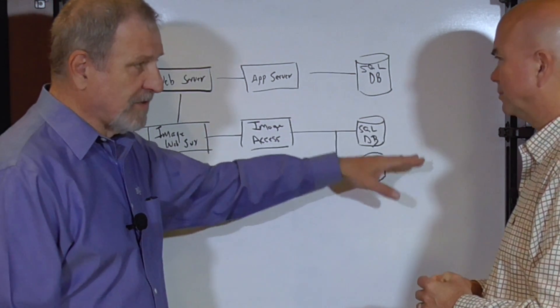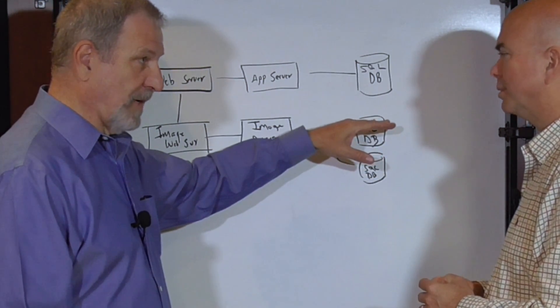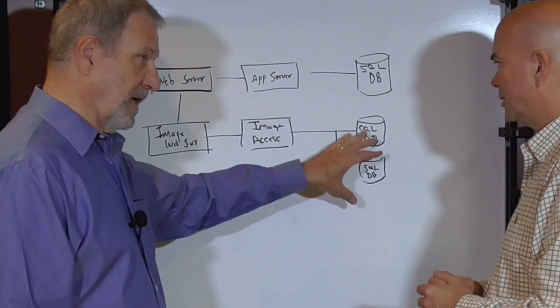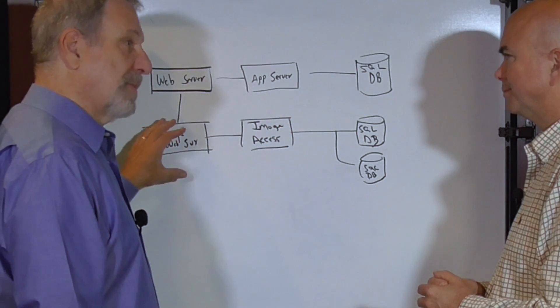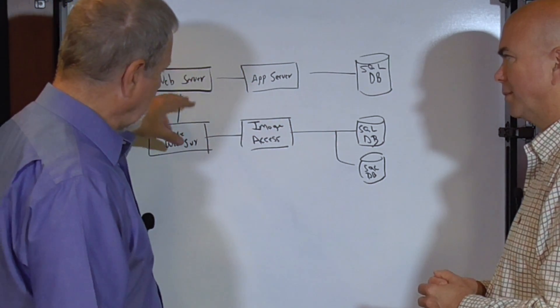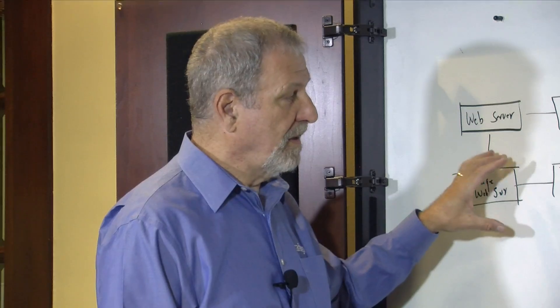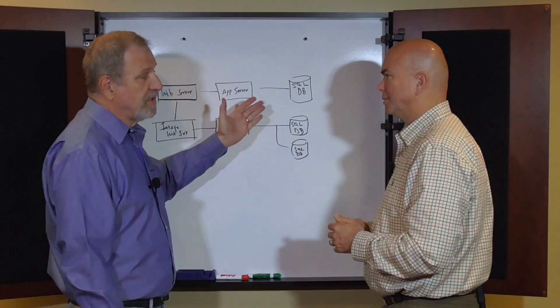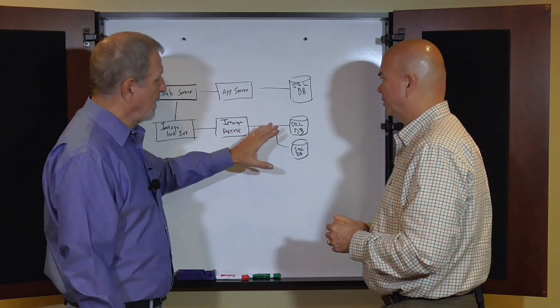Usually what people do is build a parallel track. They've got a set of file systems or relational databases. They've got an application that can retrieve those images from the relational databases and then turn them into something they can serve up on the web. Might be the same web server or a parallel one. The big problem with all of this is that for a really large site, some of these sites have upwards of three billion images.